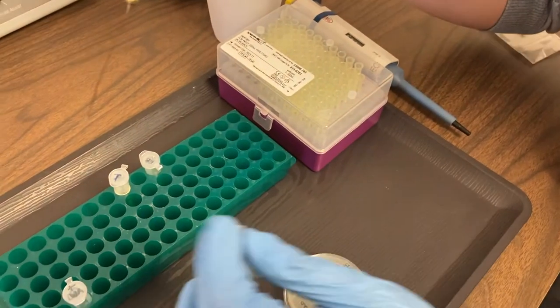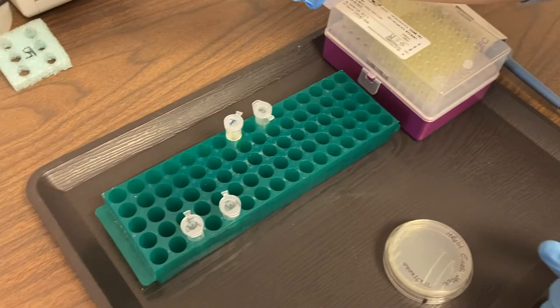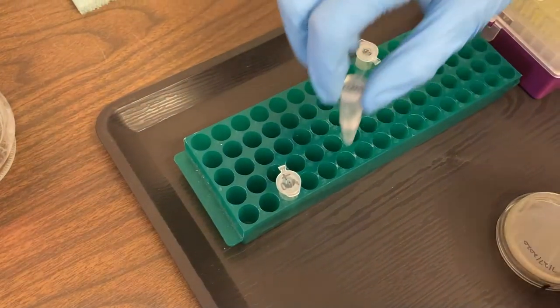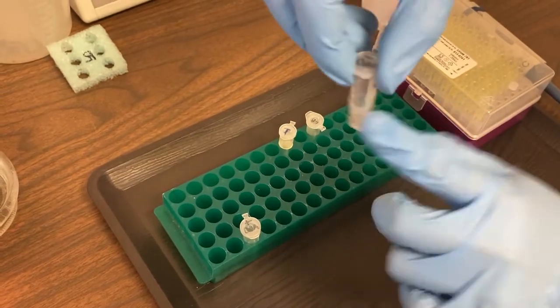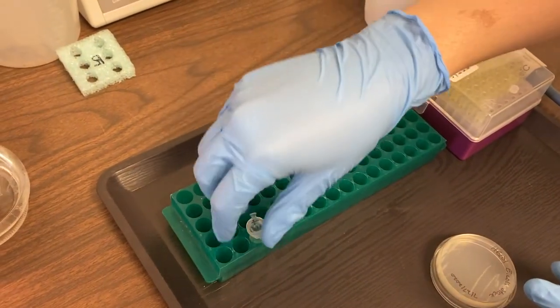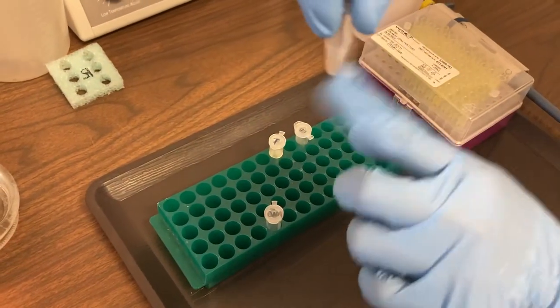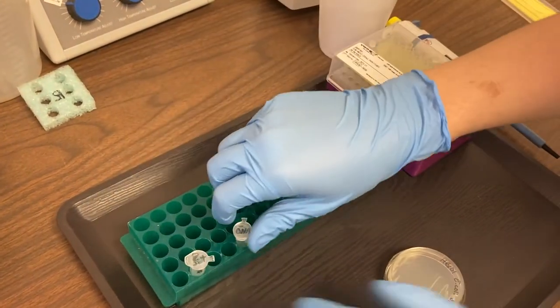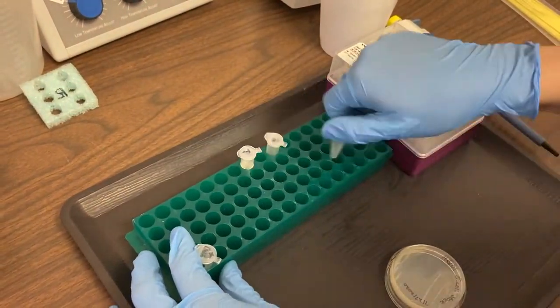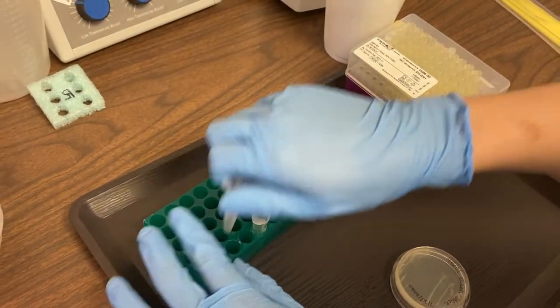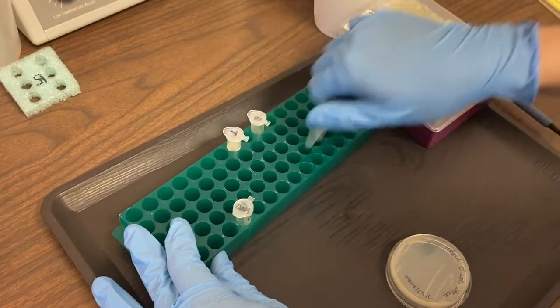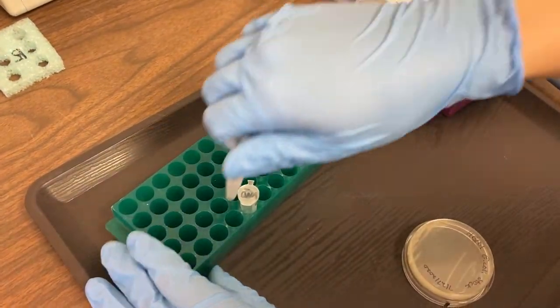Now that our bacteria is in there we're going to make sure that it is mixed well with the calcium chloride. One way we can do that is by flicking the tube. Make sure you have a good grip on the top before you do this. The second way you can do this is called racking your microtube. You use your microtube rack and you run the tube across the top of it. It does a really good job of mixing up the bacteria into that calcium chloride.